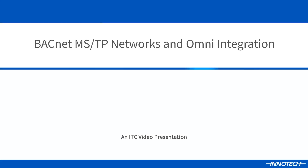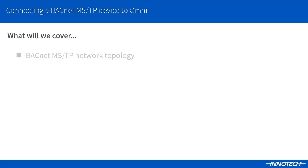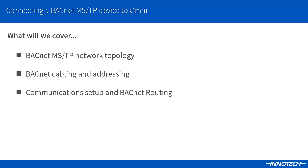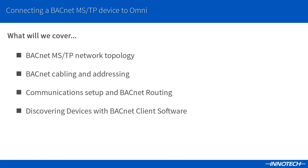Welcome to this introduction to BACnet MSTP networks and Omni integration. In this presentation we will cover the fundamentals of a BACnet MSTP network topology including cabling specifications and addressing requirements. We will see how to configure the Omni comms port for BACnet MSTP communications via Omni's onboard web server. Once the MSTP device is connected and communicating, we will look at how to discover the device in Intertec's ICOM server via a BACnet UDP connection.